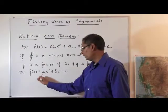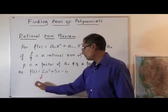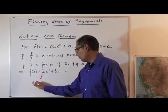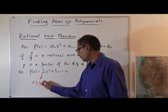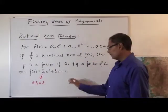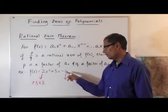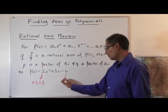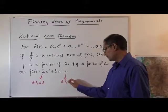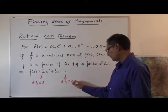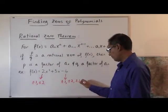And the factors of 2, if we list them out, the lead coefficient factors are plus or minus 1 and plus or minus 2. And the factors of 4, which is the constant term, so we look at the lead term, constant term, the factors of 4, plus or minus 1, plus or minus 2, and plus or minus 4.